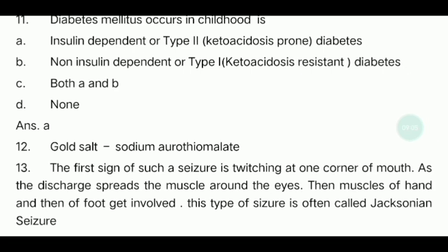Thirteenth question: The first sign of such a seizure is twitching at one corner of the mouth. As the discharge spreads, the muscles around the eye, then the muscles of the hand and foot get involved. This type of seizure is often called a Jacksonian seizure. It starts at one corner of the face and spreads progressively — if it stays in a local or particular area, then the seizure will be focal.